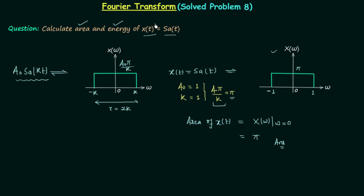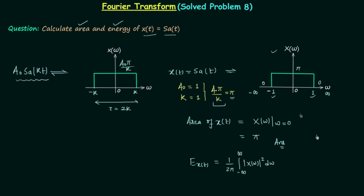Now we will calculate the total energy of x(t) using Parseval's energy theorem. The total energy E_xt equals (1/2π) times the integral from minus infinity to infinity of |X(ω)|² dω. Since X(ω) = 0 for ω < -1 and for ω > 1, the integrals over those regions are zero, and we are left with a non-zero contribution only between -1 and 1.